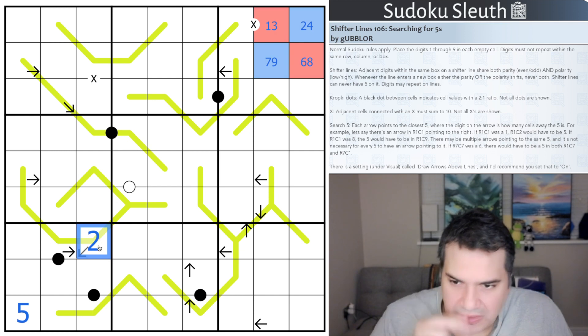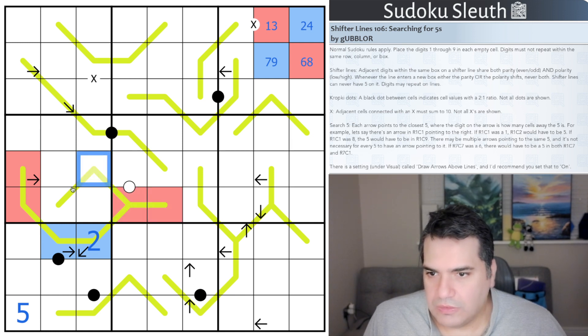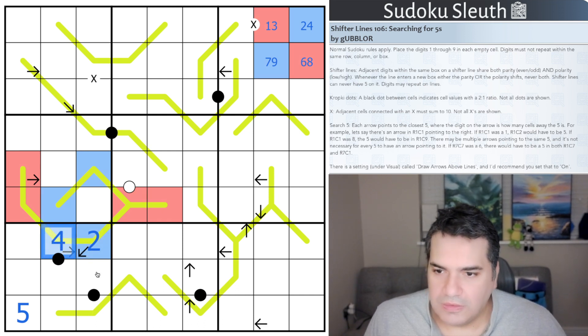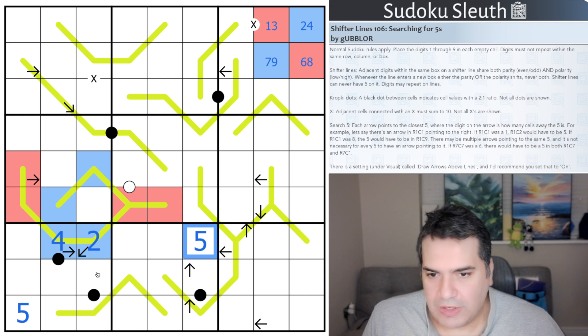So anyway, a two in here means that it is blue. That means that these two cells are red. This is red. Red, changing colors again, back to blue. Remember this two and four, this has to be a four, just to make sure it's the same parity and polarity on here. This is an arrow that's pointing towards a five, one, two, three, four, that's a five. This is an arrow that's pointing towards a five. This is a one. This is a two.